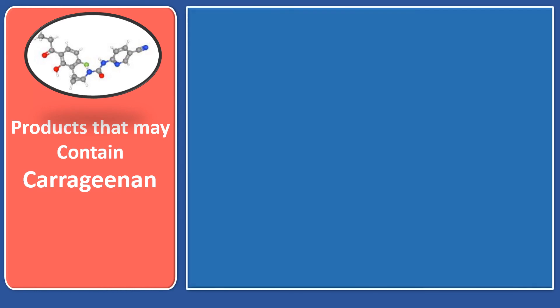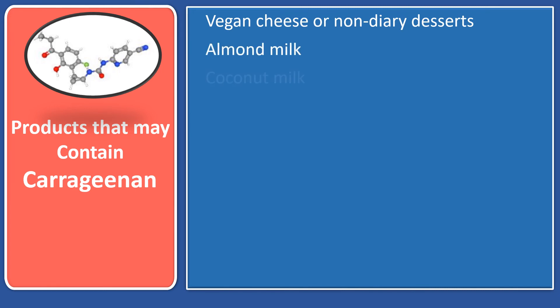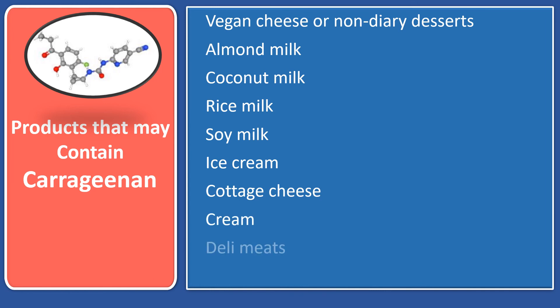If you want to avoid consuming carrageenan, check the label of the following products because they can contain it. These products include dairy alternatives such as vegan cheeses or non-dairy desserts, almond milk, coconut milk, rice milk, soy milk, ice cream, cottage cheese, cream, deli meats, and hemp milk.